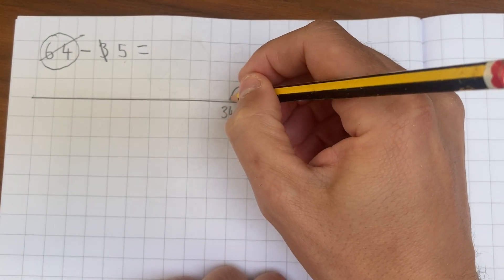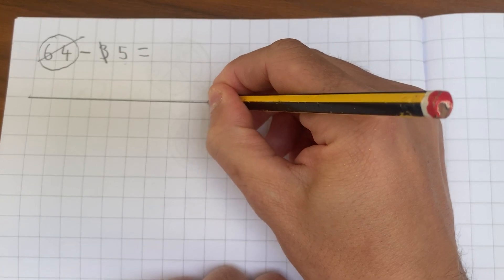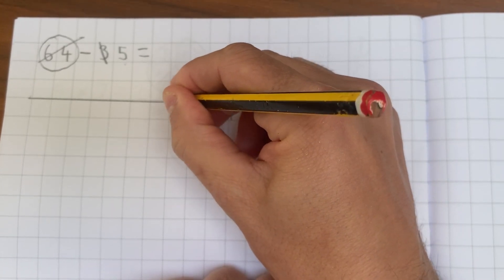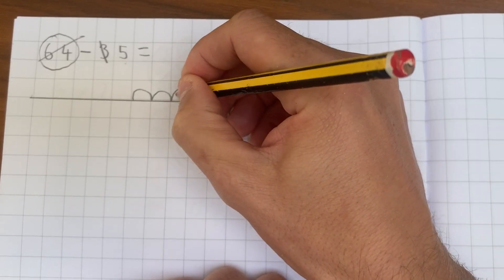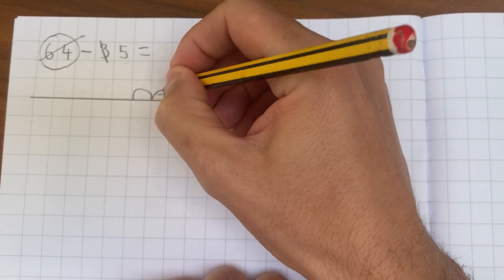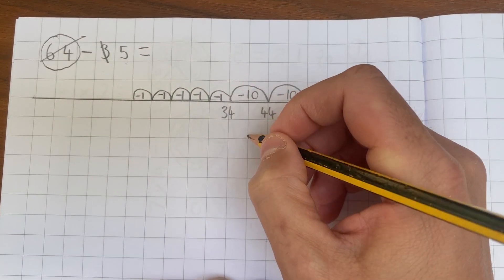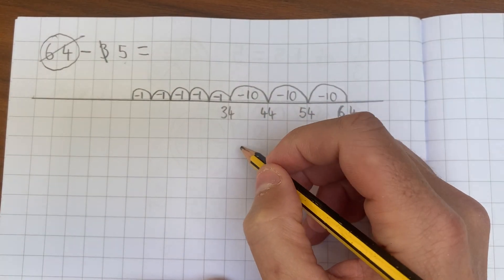Now I just need to take away five ones, which I'm going to do here. One, two, three, four, five. So I'm going to take away one for each of these. And this is just counting backwards now, not in tens anymore, just backwards in ones.